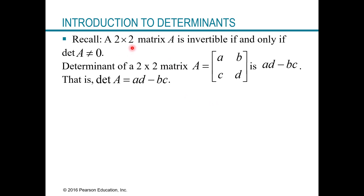Recall that a two by two matrix is invertible — meaning it has an inverse — if and only if its determinant is not zero. For this A, B, C, D matrix, the determinant is just A times D minus B times C. One way to remember this is to draw it out: A times D minus B times C — down diagonal right, minus down diagonal left. That's how you get the determinant of a two by two.